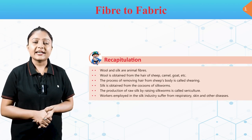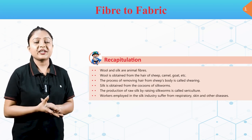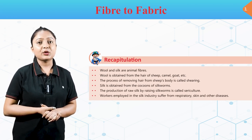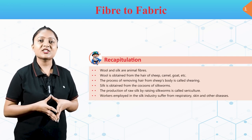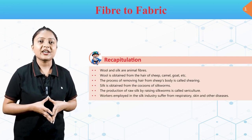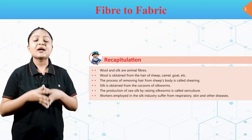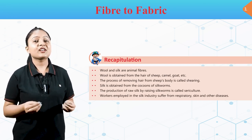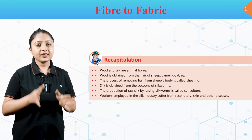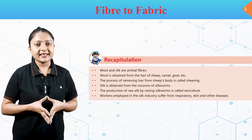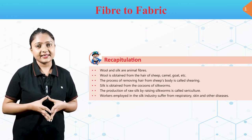Recapitulation: Wool and silk are animal fibers. Wool is obtained from the hair of sheep, camel, goat, etc. The process of removing hair from a sheep's body is called shearing. Silk is obtained from the cocoons of silkworms. The production of raw silk by raising silkworms is called sericulture. Workers employed in the silk industry suffer from respiratory, skin and other diseases.